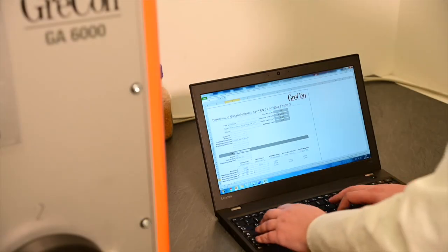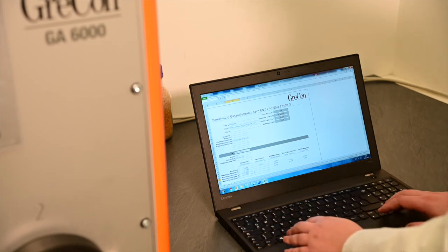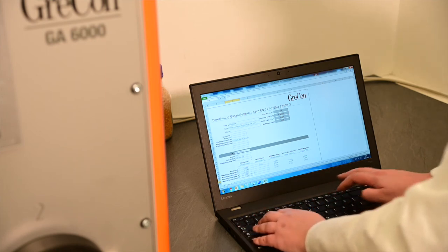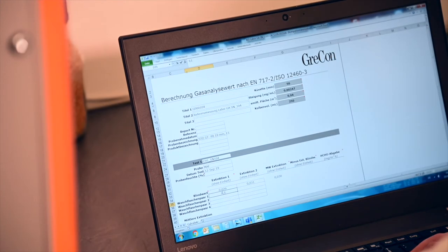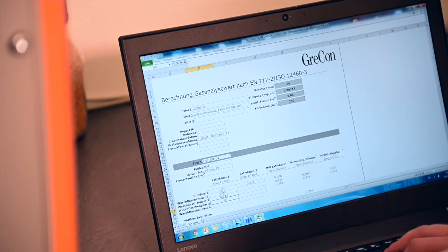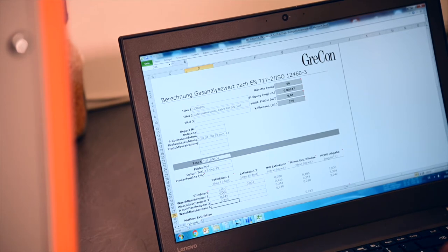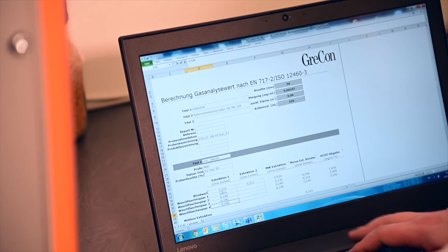Finally, the measured values of the individual test hours must be converted into an overall gas emission value, in accordance with the specifications of the ISO 12460-3 standard. The gas analysis method thus allows reliable emission determination for coated and uncoated wood-based materials.